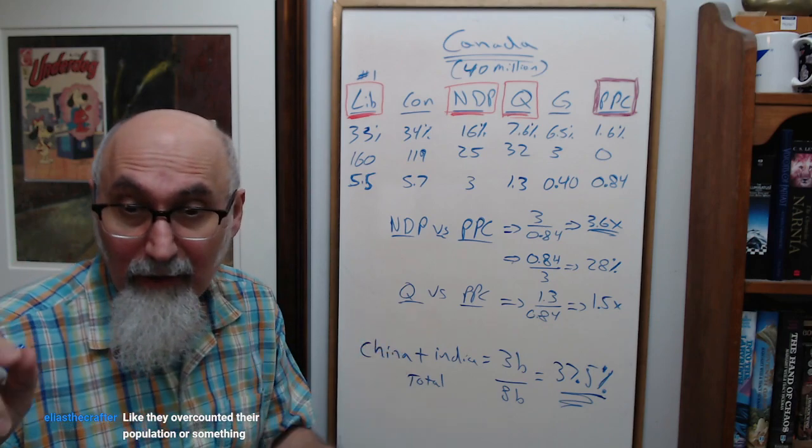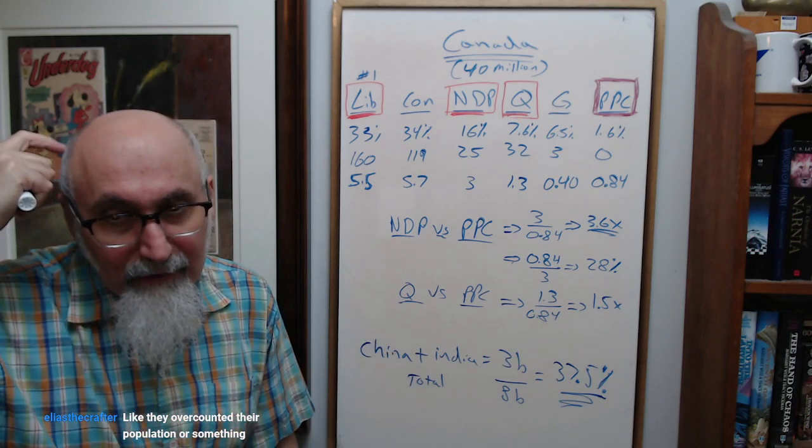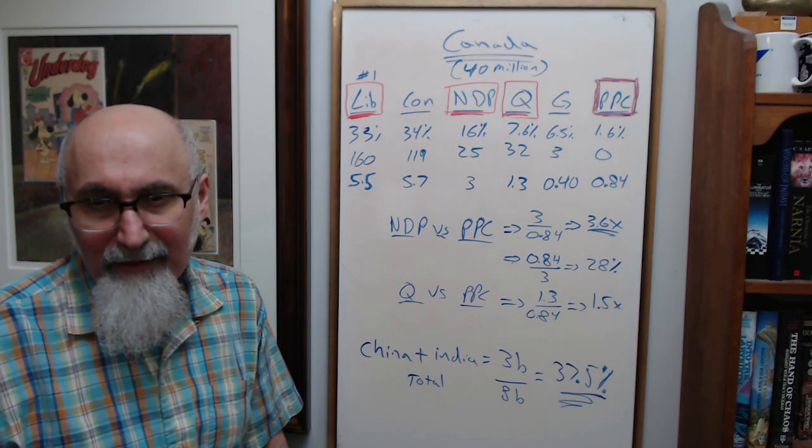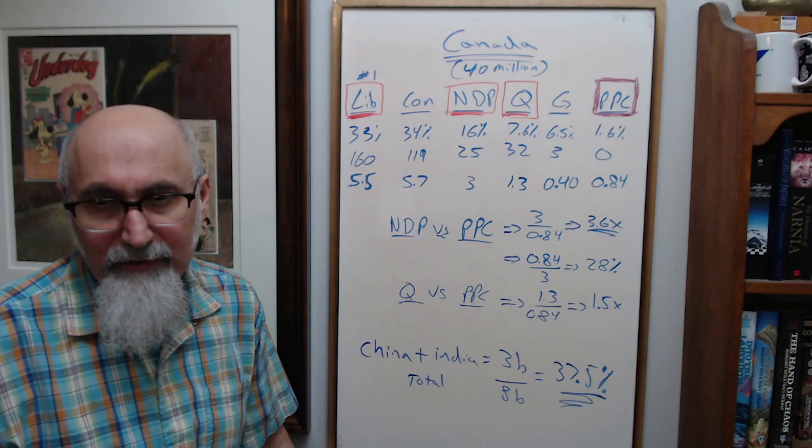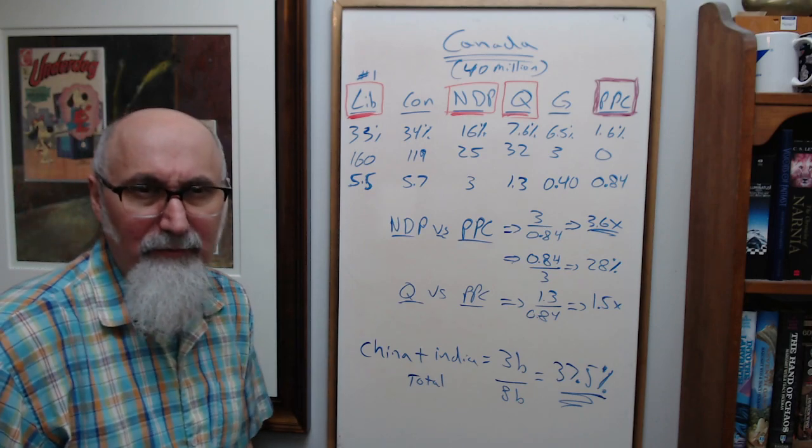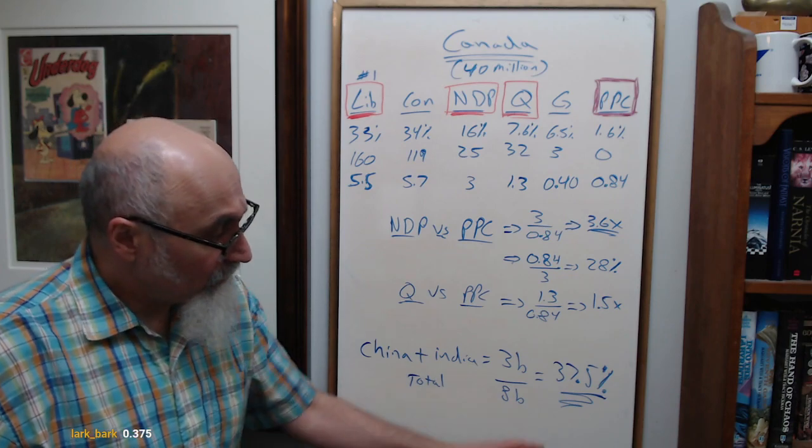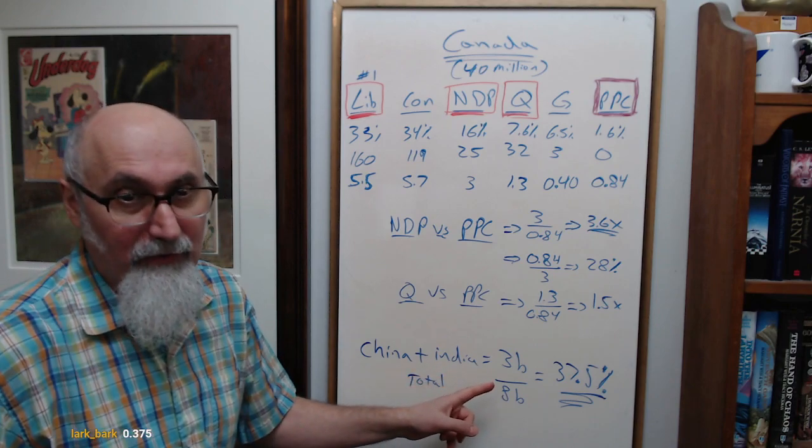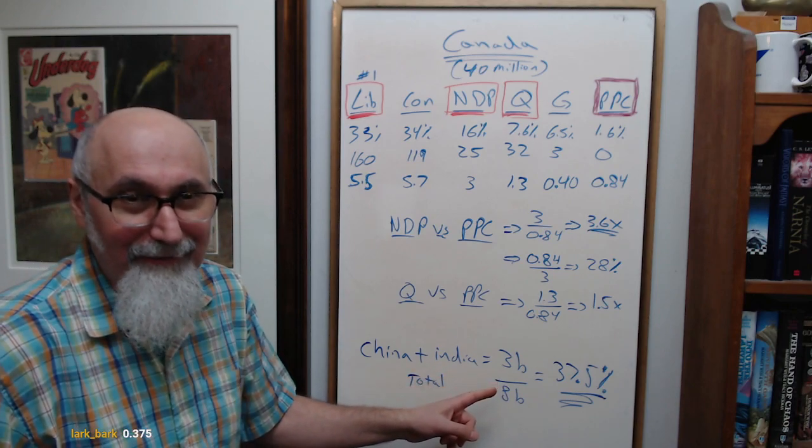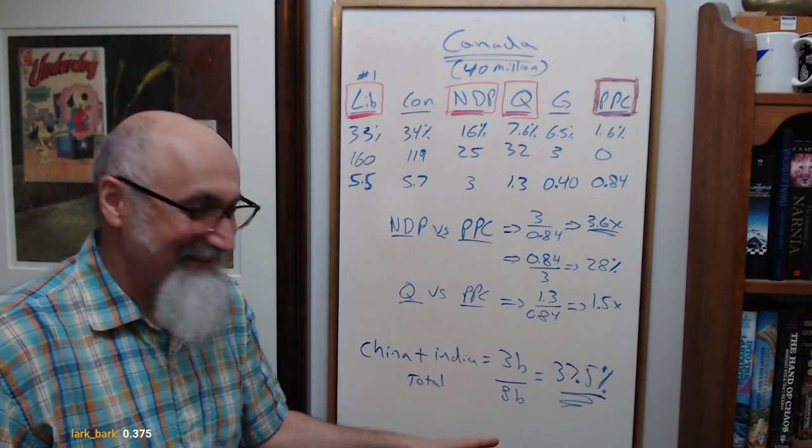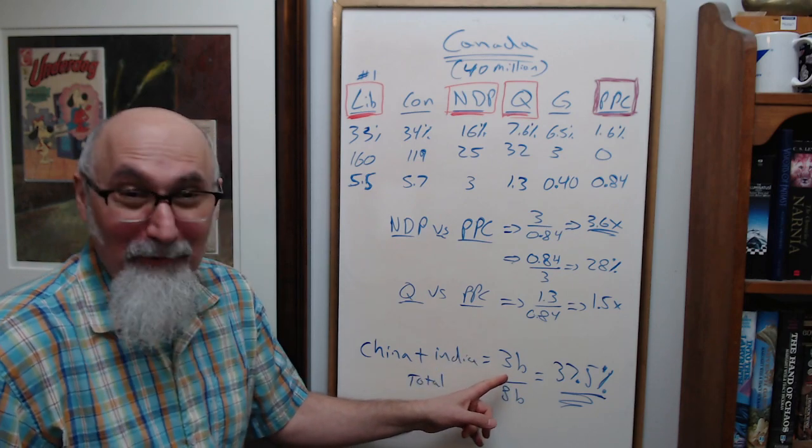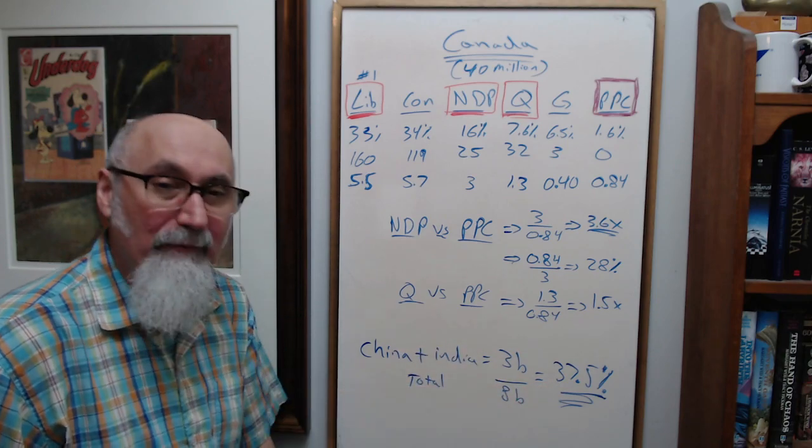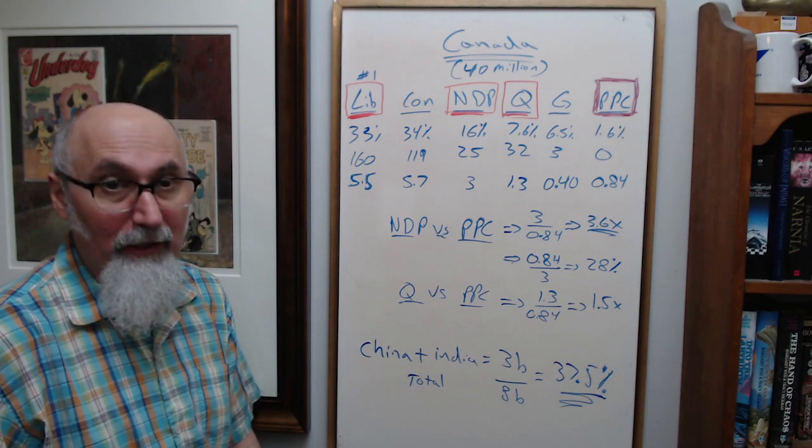I heard China actually has only 1.3 billion—they over-counted their population or something. Possibly, but my guess would be they may be undercounting. We'll round it up to 1.5 because I can almost guarantee India's undercounting. There's no way they have the statistics to count them. Let's assume together they control 3 billion people—that's 37.5 percent of the global population.